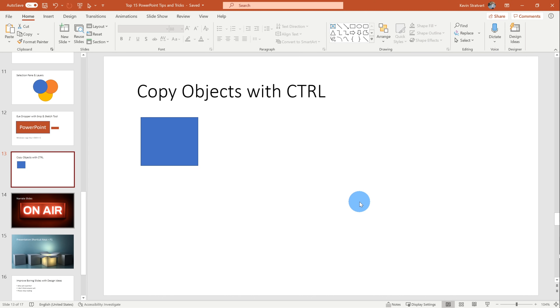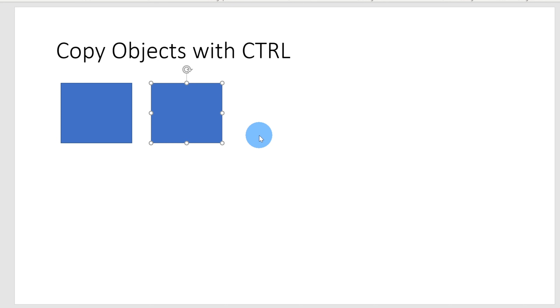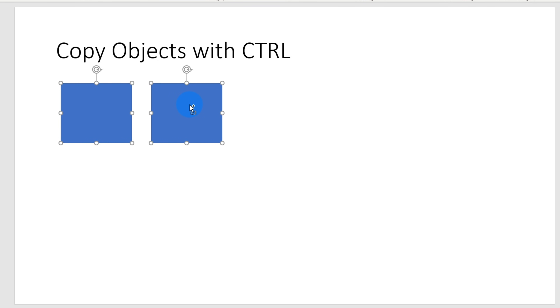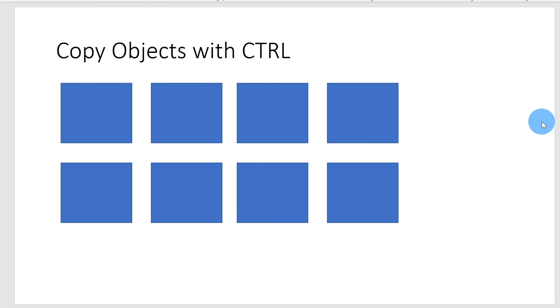Tip number eleven: I want to show you how you can copy objects using the Ctrl key. I have a rectangle on the slide currently selected. If I press the Ctrl key and then click on the object and drag it over, this gives me a copy of the object. I can also select multiple items — highlight both items, press Ctrl, and drag down to get two copies. I could select all four and press Ctrl to get a whole bunch of copies of the original rectangle.